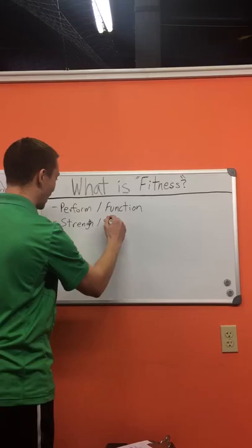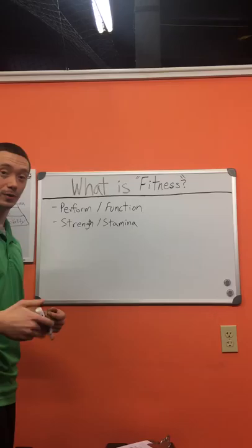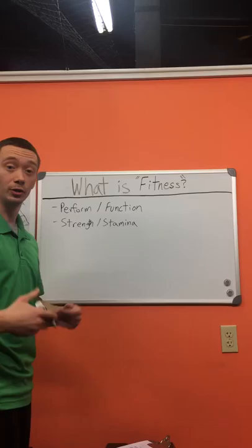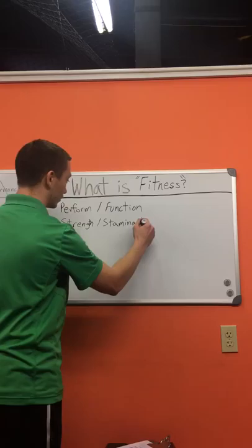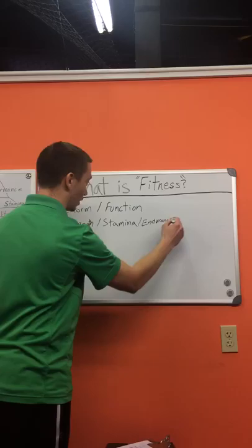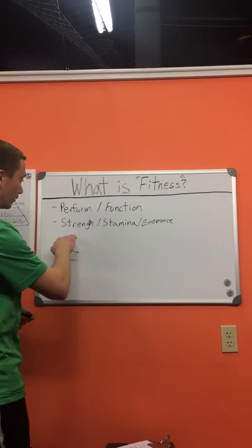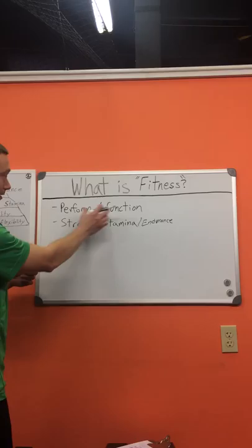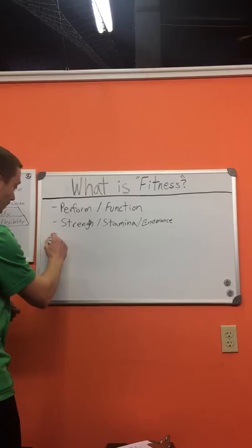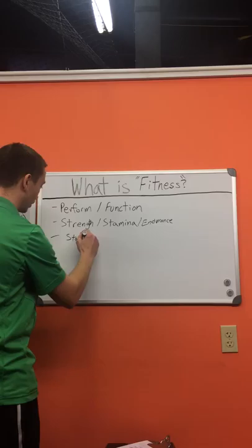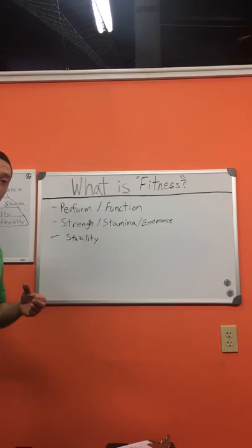A couple of things that go into it: you have to have an adequate amount of strength to perform certain tasks. You also have to have a certain level of stamina to be able to perform that task over a period of time. Do you have the strength to get upstairs? Do you have the stamina to get up three flights of stairs? Stamina also goes into endurance — is your heart healthy? Are your lungs healthy? Do they do what they need to do? Strength, stamina, and endurance together comprise performance and function.